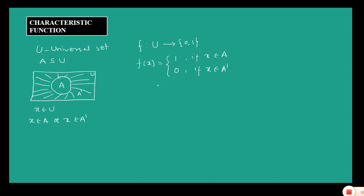This type of function is called a characteristic function, or sometimes it is called an indicator function. It is notationally denoted by chi_A. Chi_A(x) is equal to 1 when x belongs to A, and equal to 0 when x belongs to A complement. This is the definition of characteristic function.